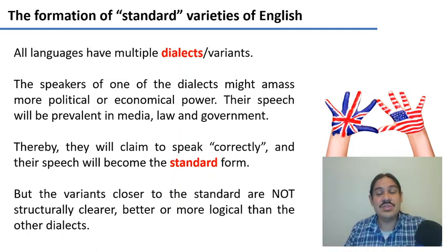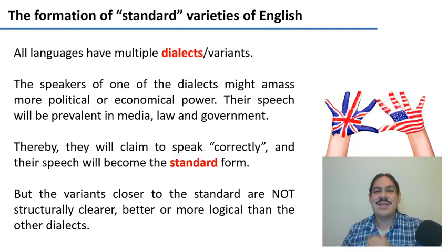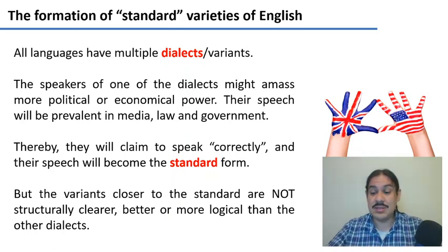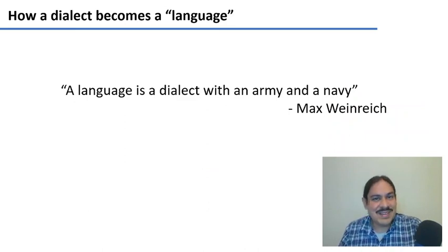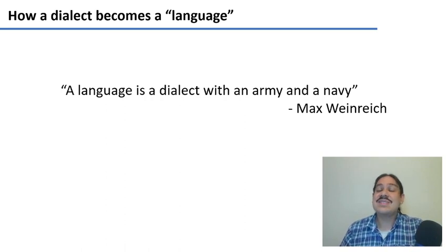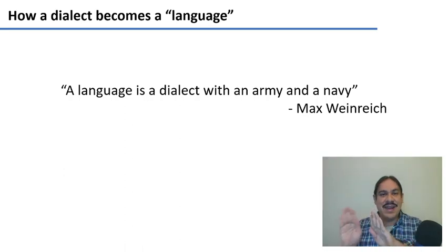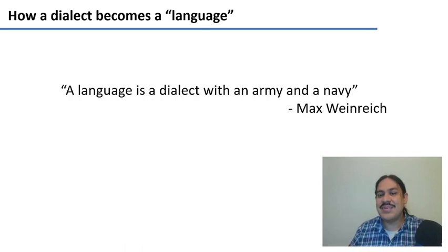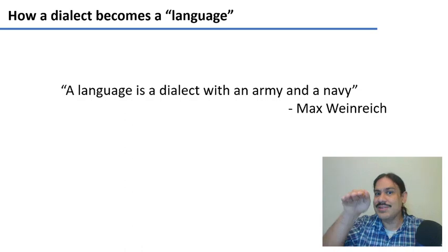In the current world, there are two main standards: American English and Received Pronunciation, which is based on upper-class London. This brings to mind a famous quote from Yiddish linguist Max Weinreich: 'A language is a dialect with an army and a navy.' We all speak a dialect, but the ones called the official or standard language are the ones with more power to make that claim — and that claim is political, not linguistic.